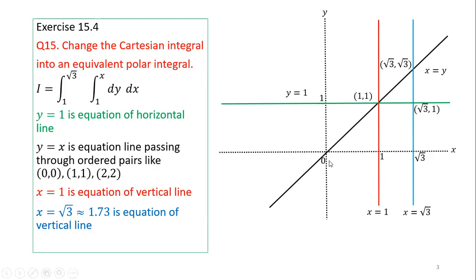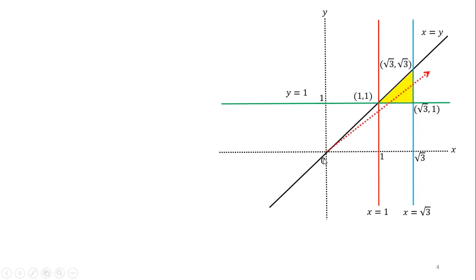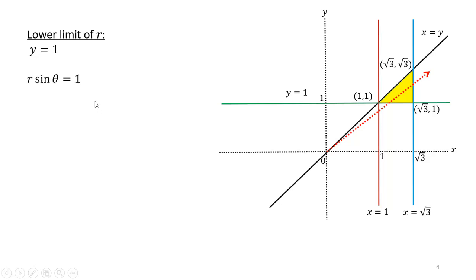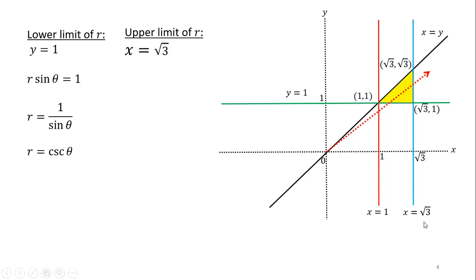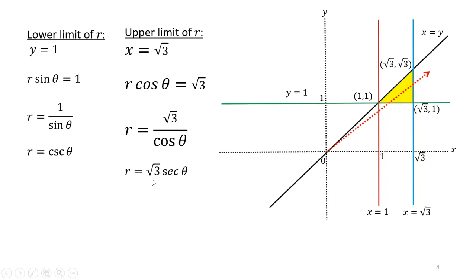To calculate the limits of r, we pass an arrow through the region. The arrow enters through the green boundary y = 1 and exits through the blue boundary x = √3. Polarizing y = 1: substituting y = r sinθ = 1 gives r = 1/sinθ = cscθ — this is the lower limit of r. For the upper limit, polarizing x = √3: substituting x = r cosθ = √3 gives r = √3 secθ — this is the upper limit of r.